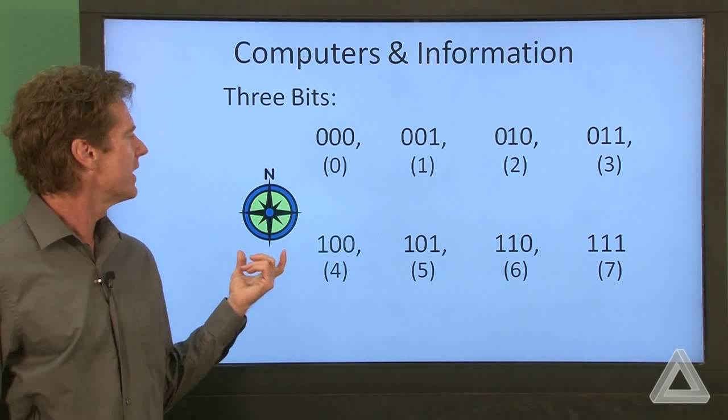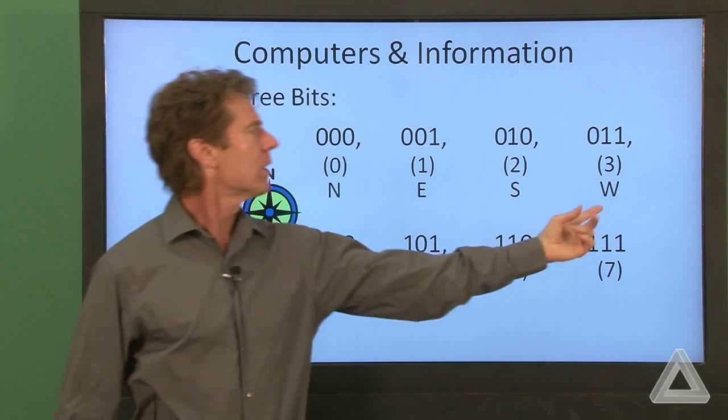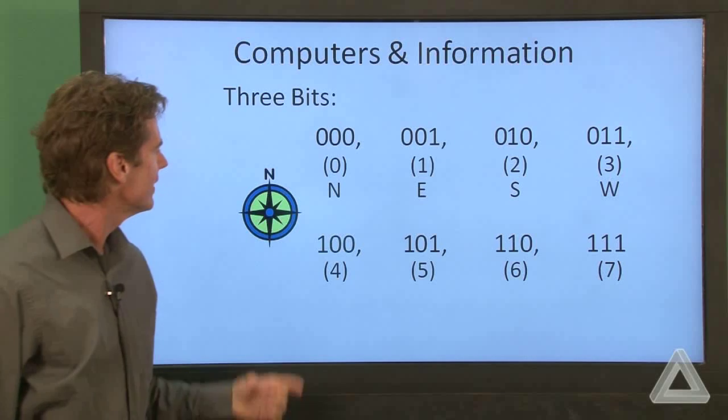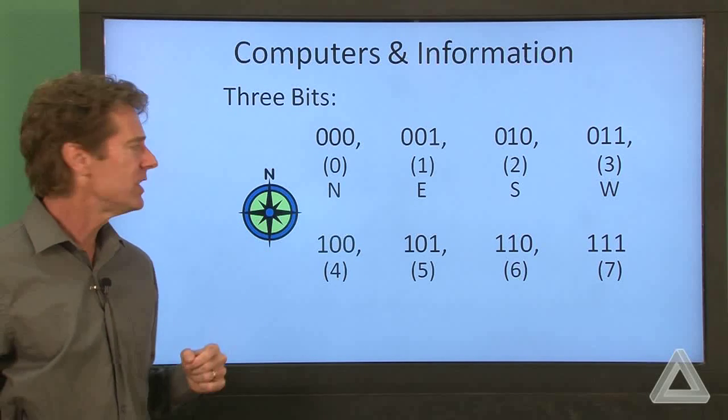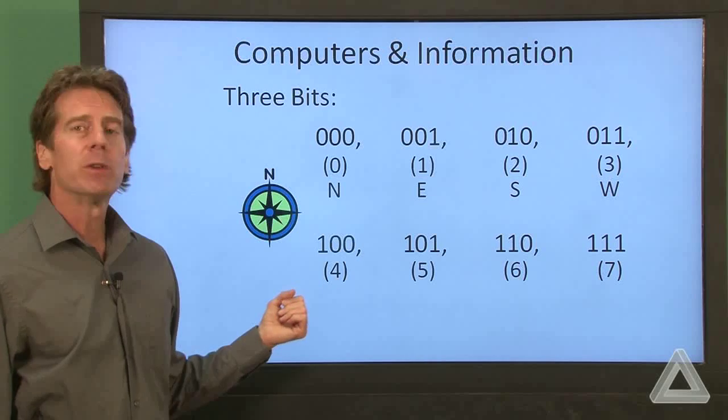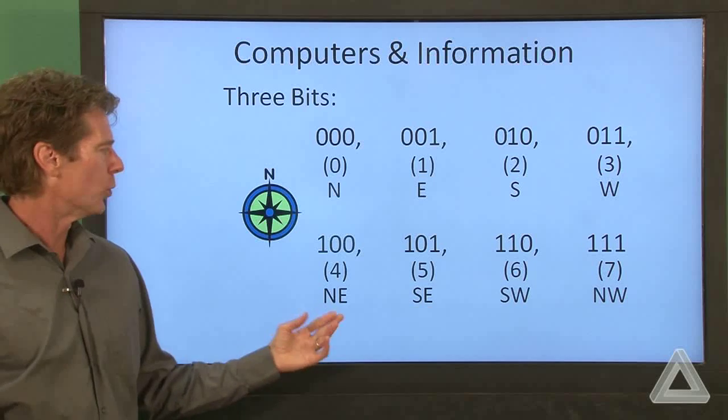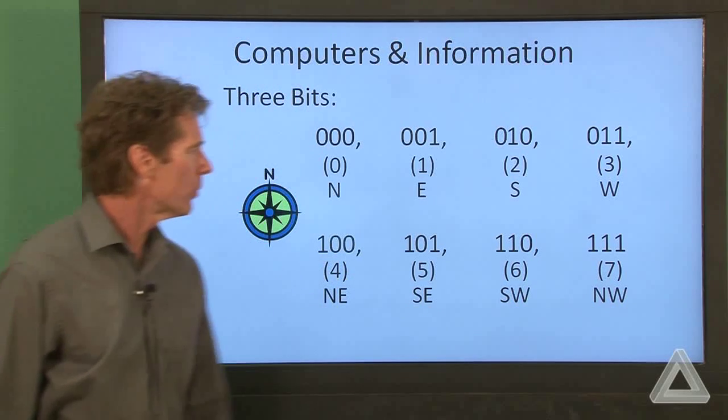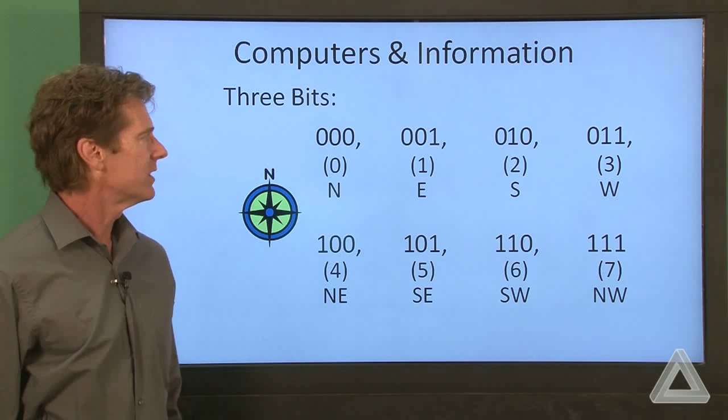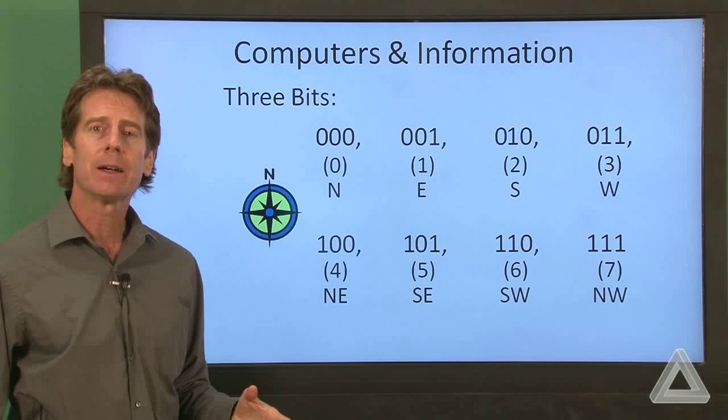So what can we do with that? Well, we can go back to the compass that we had before with directions. And with four unique values, we could represent the cardinal directions of north, east, south, and west. But now by tacking on one additional bit, we picked up four more values that we can represent. And so now we can represent the intercardinal directions of northeast, southeast, southwest, and northwest. So we could use these eight values to represent these directions. But anything that has eight unique values, we could map to these bits. It's up to us.